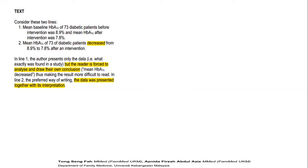What do you notice about these two sentences? In line one, the author presents only the data, possibly exactly as it is found in the study, and so it forces the reader to try to analyze and draw his or her own conclusions. However, in the second line, the data are presented together with its interpretation. We can see that line two is a more preferred style of writing.